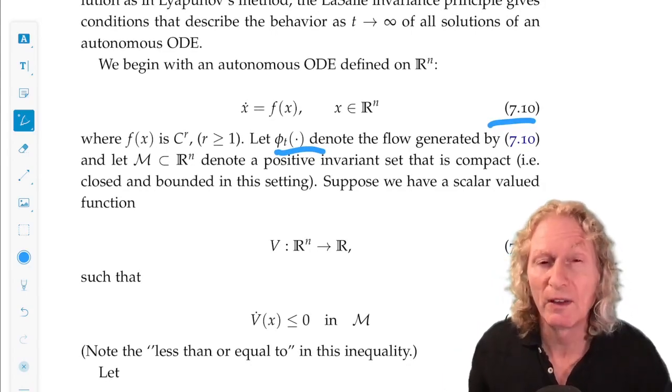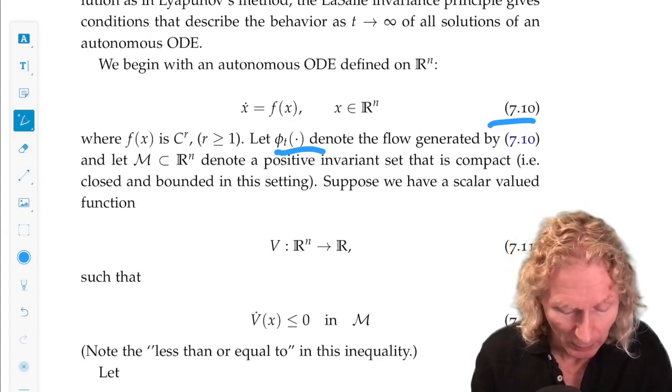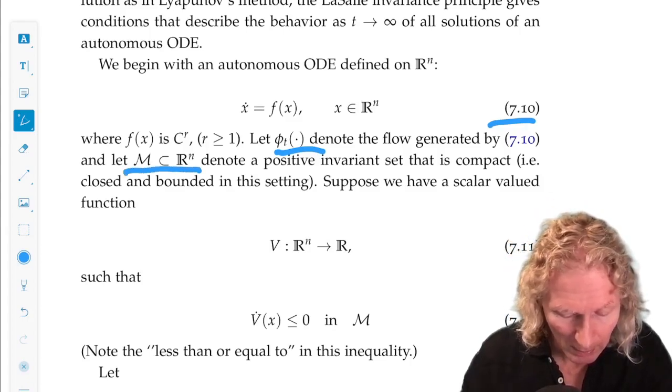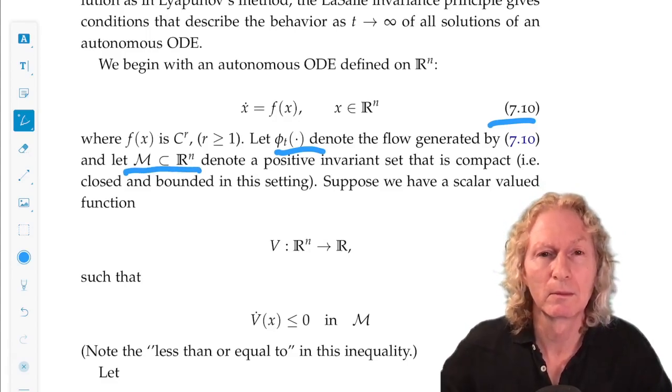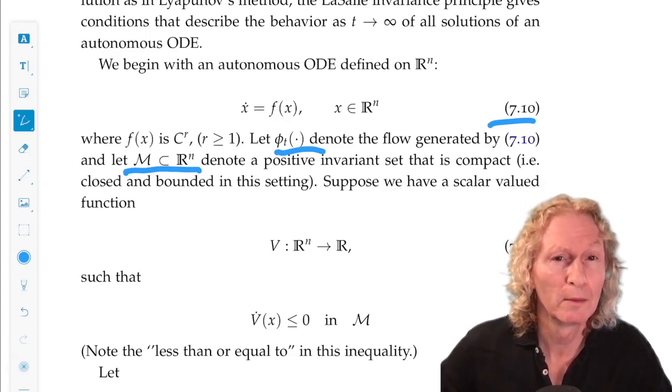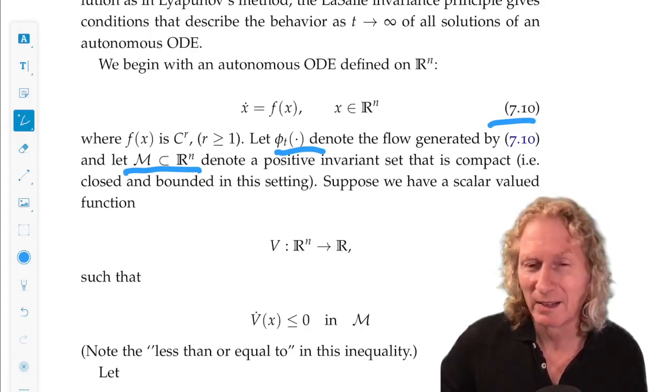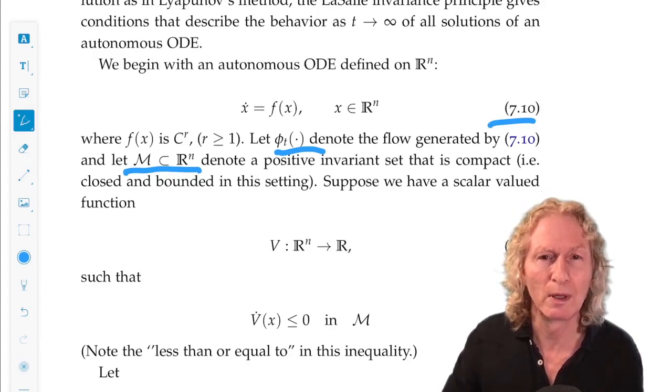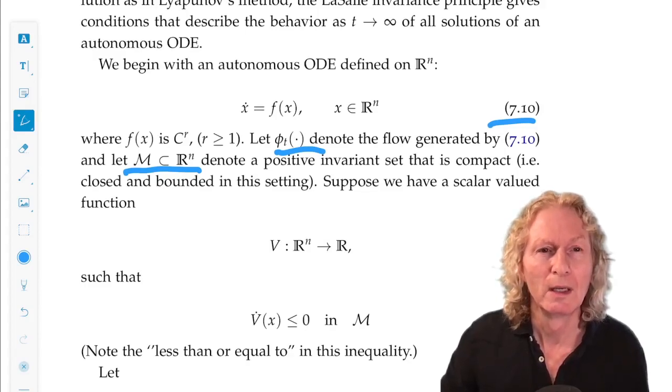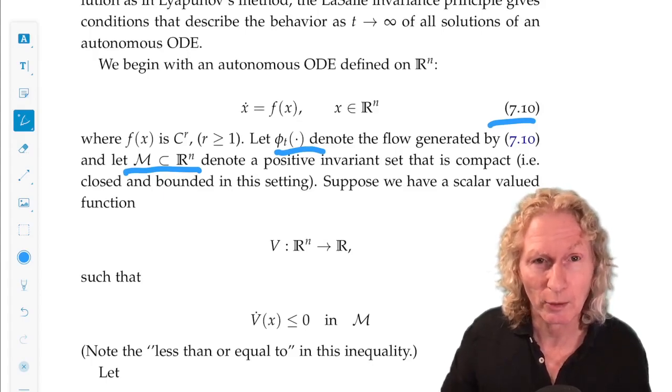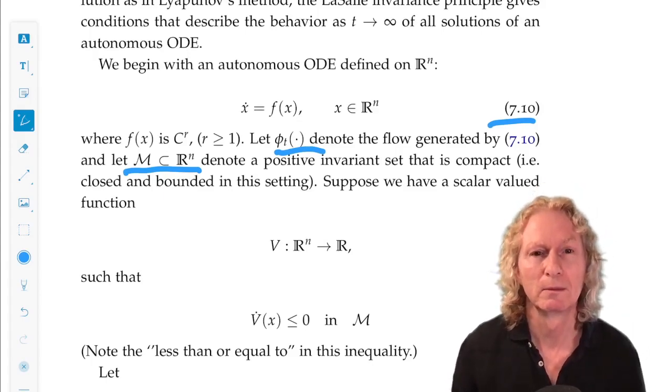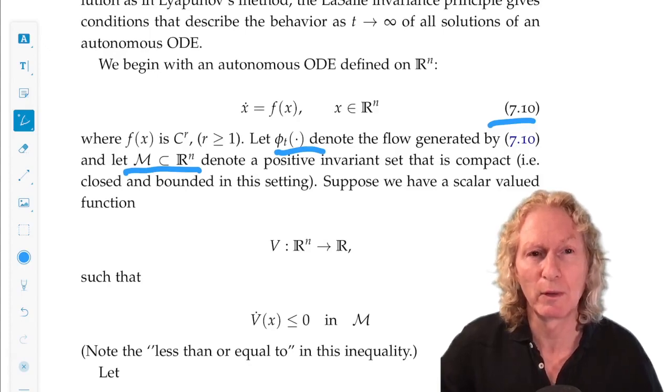We need three sets. Calligraphic M is a positive invariant set in R^n, and we assume that it's compact. In the setting for being a subset of R^n, we need it to be closed, that it contains all its boundary points, and bounded.